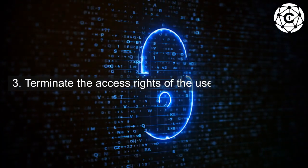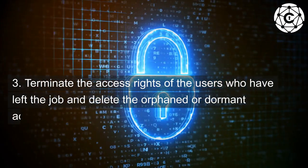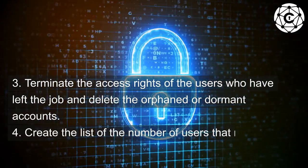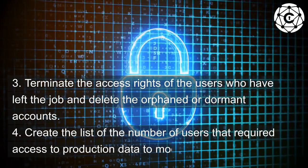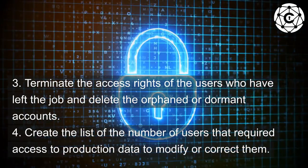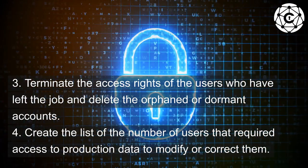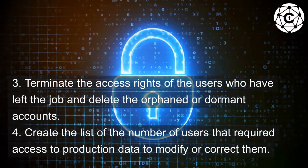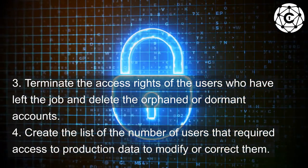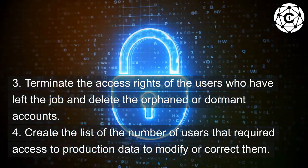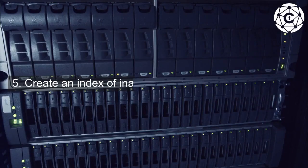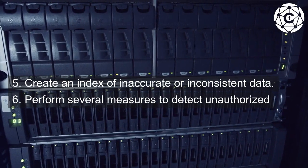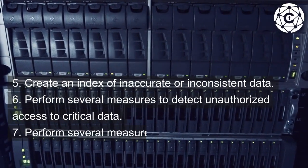3. Terminate the access rights of users who have left the job and delete the orphaned or dormant accounts. 4. Create a list of the number of users that required access to production data to modify or correct them. 5. Create an index of inaccurate or inconsistent data.